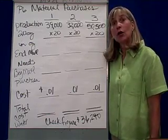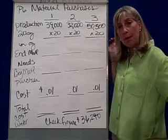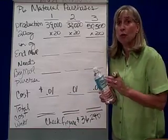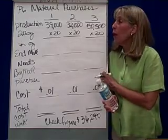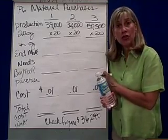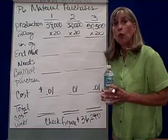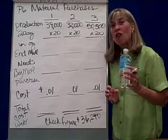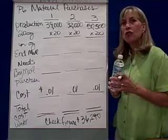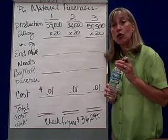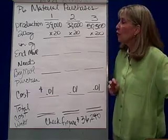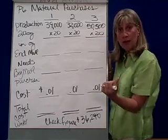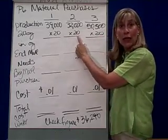Now we're going to look at the inputs. When I make a bottle of water, there's water inside of it, there's a bottle, there's a label, and there's a cap. You'll need to do a materials purchase budget for each one of these ingredients, but we're going to just be preparing the material purchases budget for the water. Each bottle contains 20 ounces, so once I've determined my production from that previous budget, I'm going to multiply it by 20 ounces.